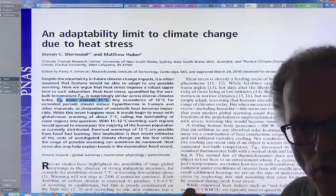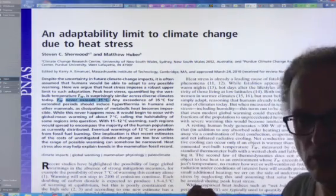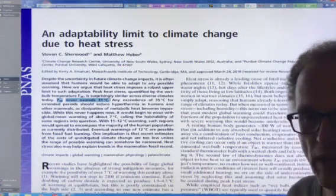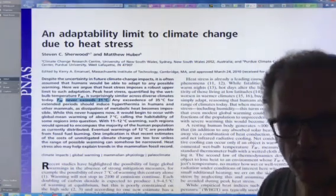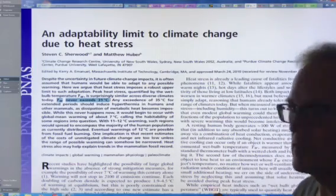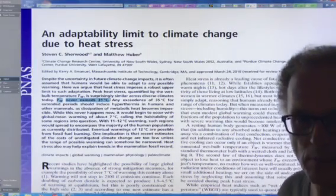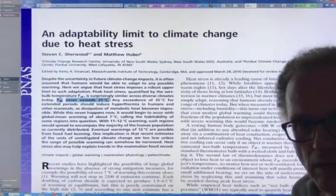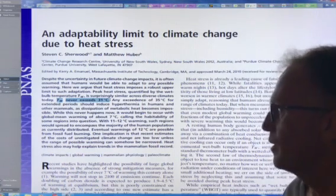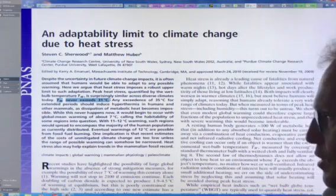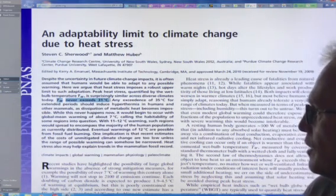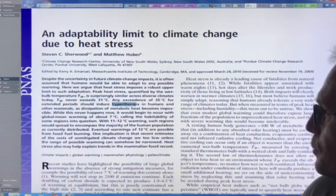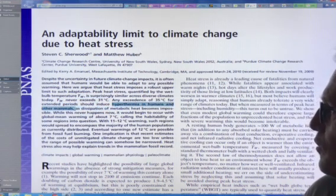It's often assumed that humans would be able to adapt to any possible warming. But heat stress puts a robust upper limit to such adaptation. Peak heat stress quantified by the wet bulb temperature T sub W is similar across diverse climates. It never really exceeds 31 Celsius. This was written in 2010. Now we've approached 35 Celsius for the wet bulb temperature in a number of places, most notably Middle East near the Persian Gulf in the middle of the summer, middle of a heat wave, because you get all that evaporation.